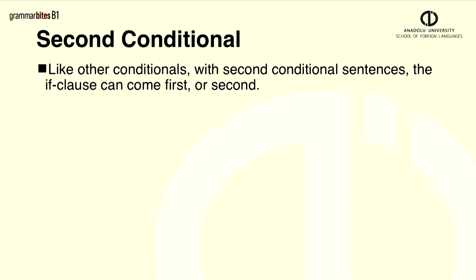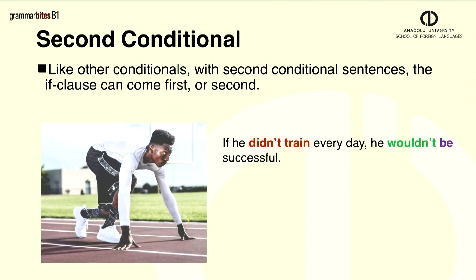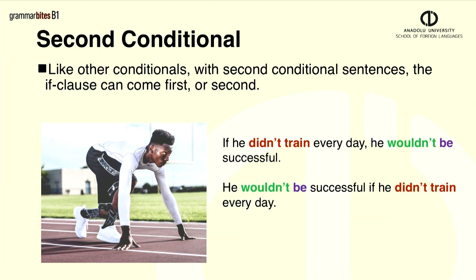Here's another example. If he didn't train every day, he wouldn't be successful. This has the same meaning as he wouldn't be successful if he didn't train every day. Again, notice the commas. We use a comma in the first sentence because the if clause is first.